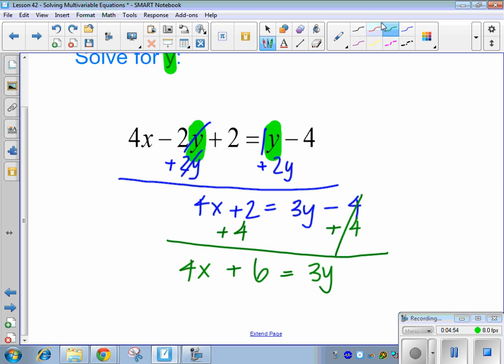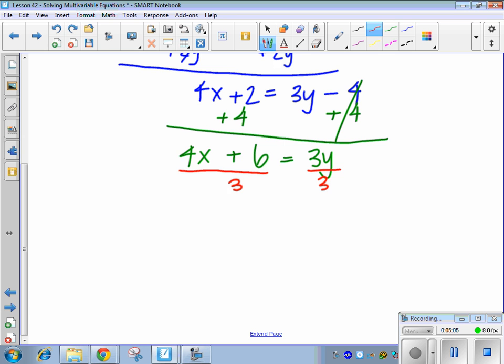But I want the y all by itself, not with a 3 on it, so I'm going to have to do what? Divide by 3. So, I get that y equals, and I need to divide each of these pieces by 3 separately. So, 4x over 3 is just going to give me 4 over 3x. 6 divided by 3 gives me what? Plus 2.